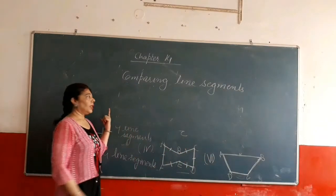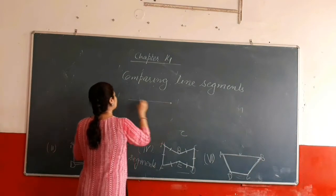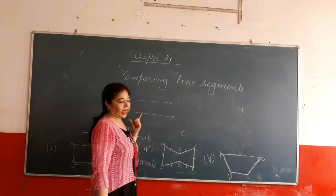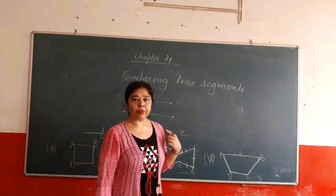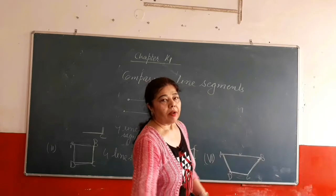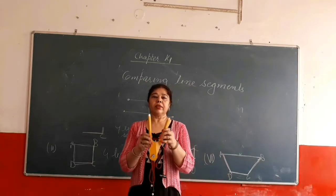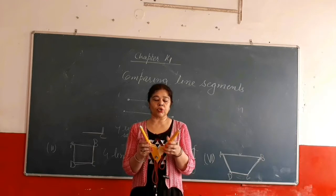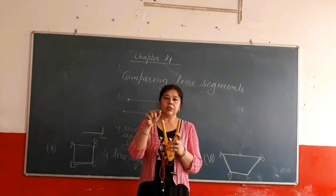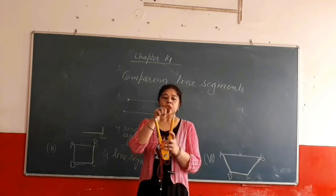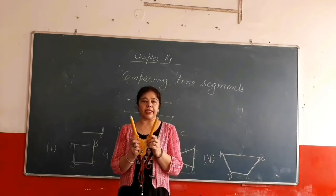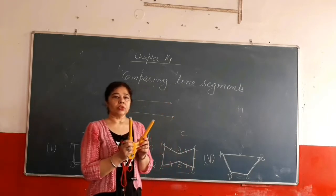To compare the line segments means to find which line is greater or smaller without a scale. How can we know which line is greater without using a scale? We can compare using a divider, which is in your geometry box. This is known as a divider and it has two points.